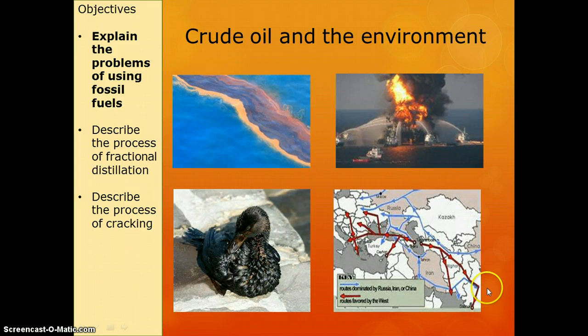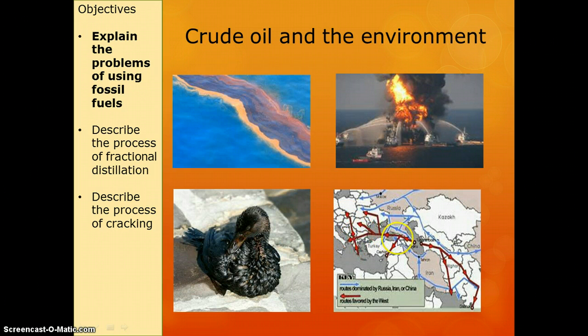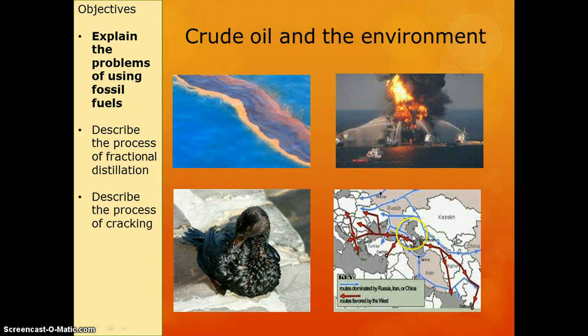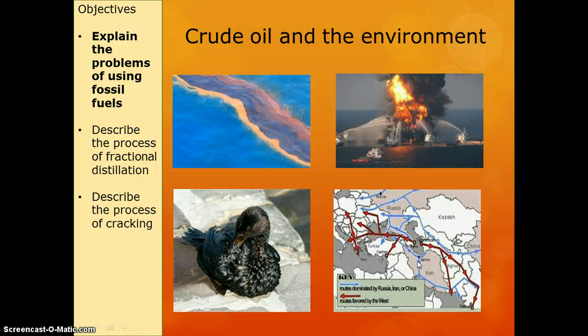The final issue we need to discuss is represented by this map over here. These arrows show you where there are oil pipelines. As you can see, most of them start in the Middle East, particularly around Iran and Iraq, and that is a problem. The reason that's a problem is because these areas are politically unstable.